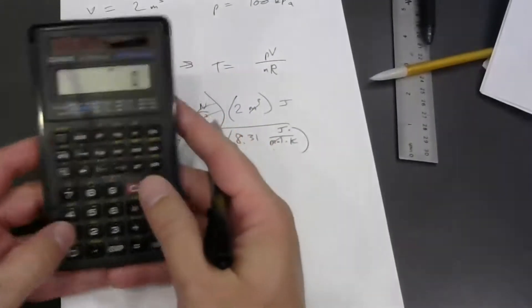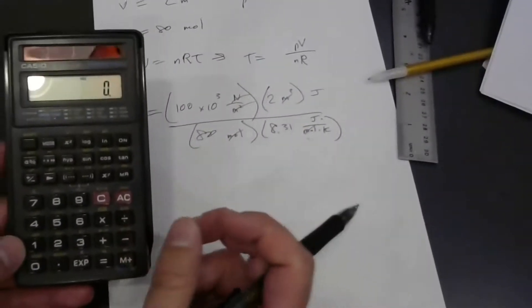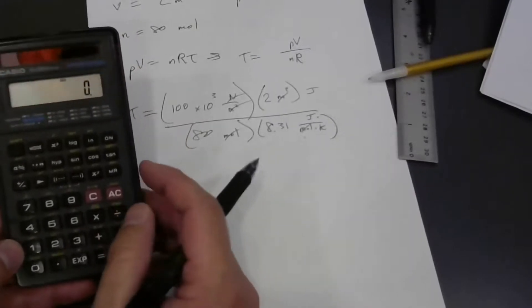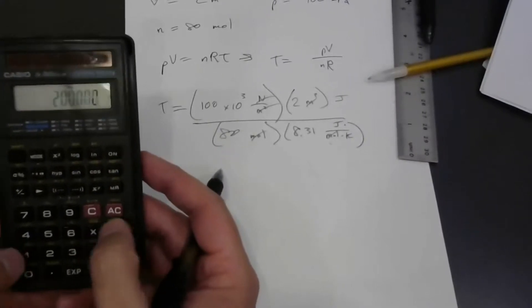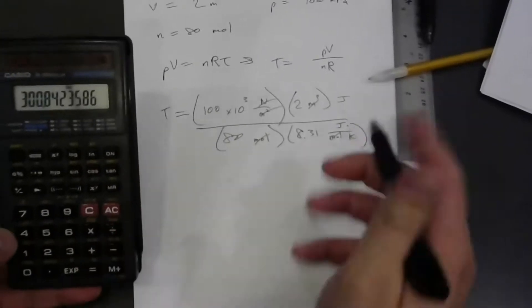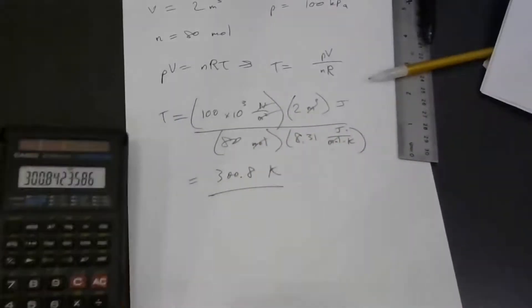This is the absolute temperature — anytime you use the ideal gas law and solve for temperature, it comes out in kelvins, not Celsius or Fahrenheit. Computing: 100,000 times two divided by 80 divided by 8.31 gives a temperature of 300.8 kelvins. Your book emphasizes saying 'kelvins' rather than 'degrees kelvins,' though some European textbooks written by Nobel Prize winners do use 'degrees kelvins.'